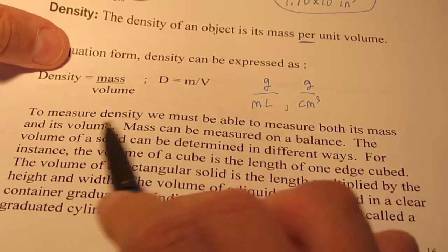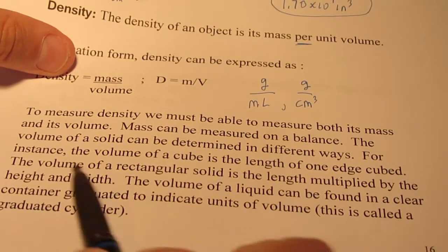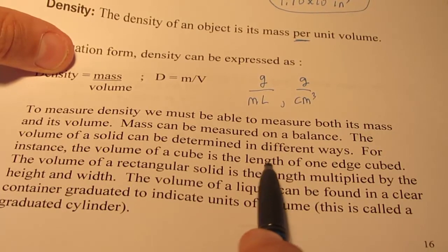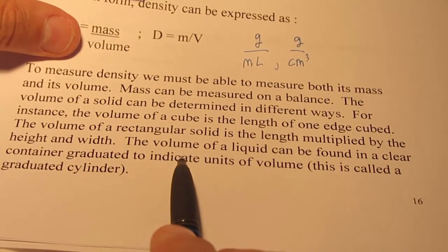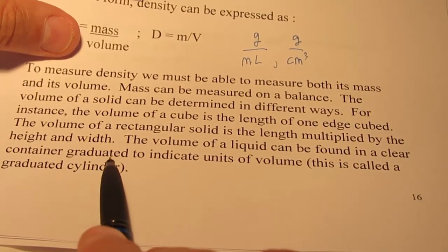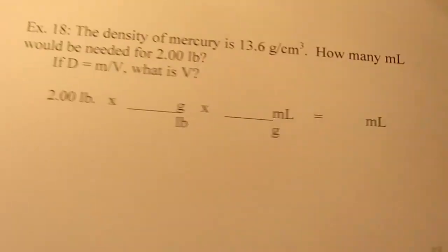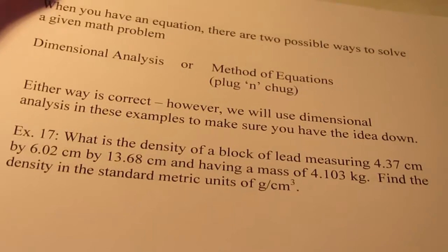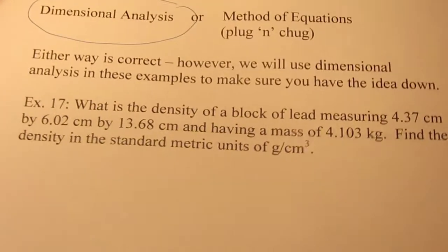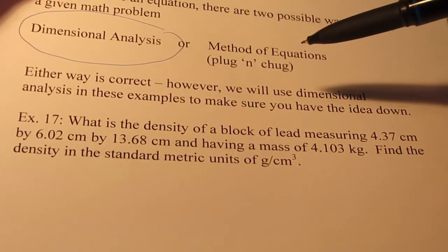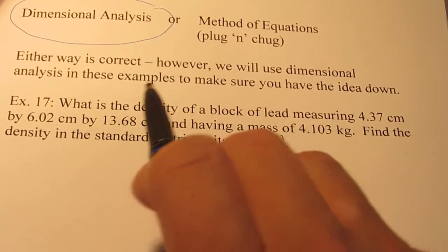To measure the density of an object, you must be able to measure its mass and its volume. Mass can be measured on a balance. The volume of a rectangular solid is the length times the height times the width. When you have an equation, there are two possible ways to solve a problem: dimensional analysis or method of equations. Either way is correct, however, we will use dimensional analysis in these examples.